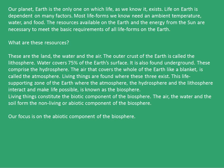Our planet Earth is the only one on which life, as we know, exists. Life on Earth is dependent on many factors. Most life forms we know need an ambient temperature, water, and food to survive. The resources available on Earth and the energy from the sun are necessary to meet the basic requirements of all life forms. These resources are basically the land, water, and air.